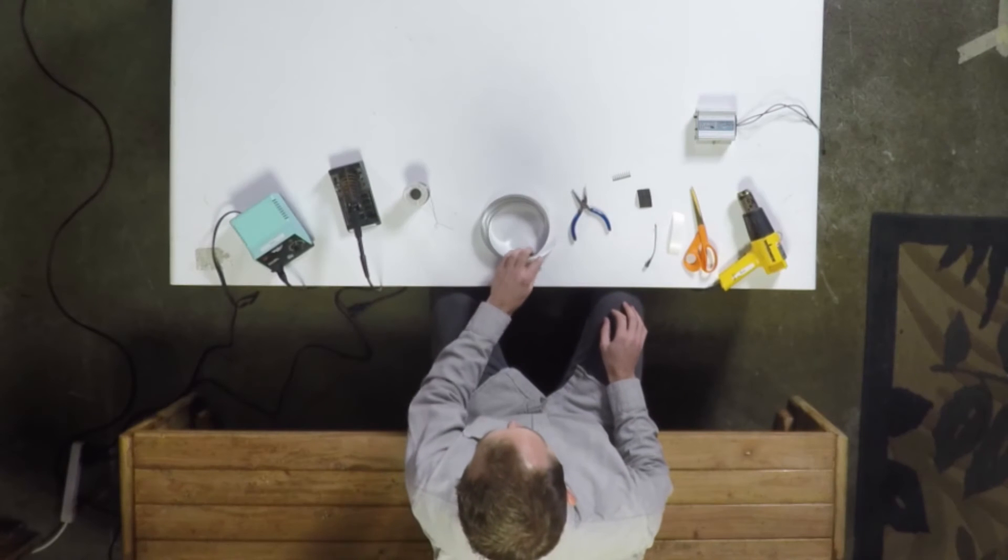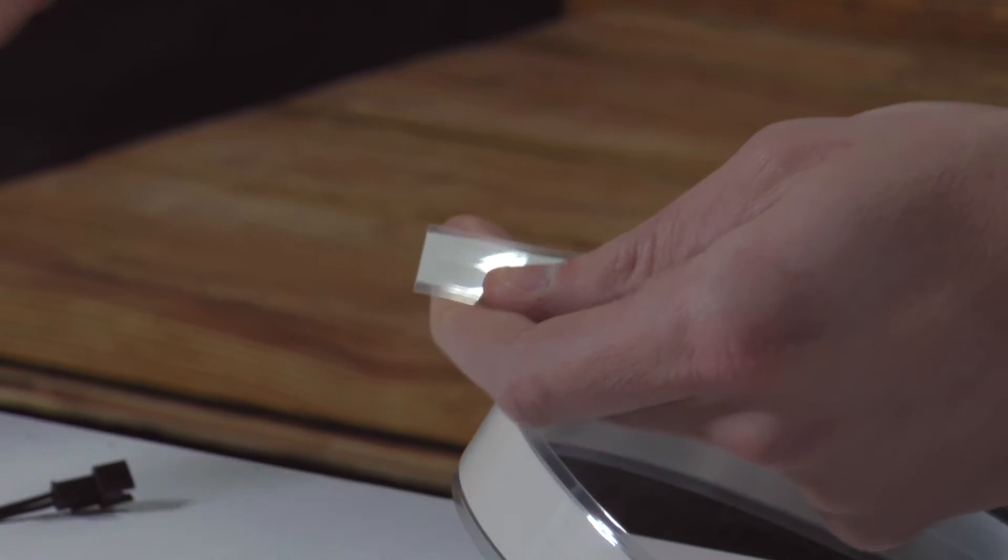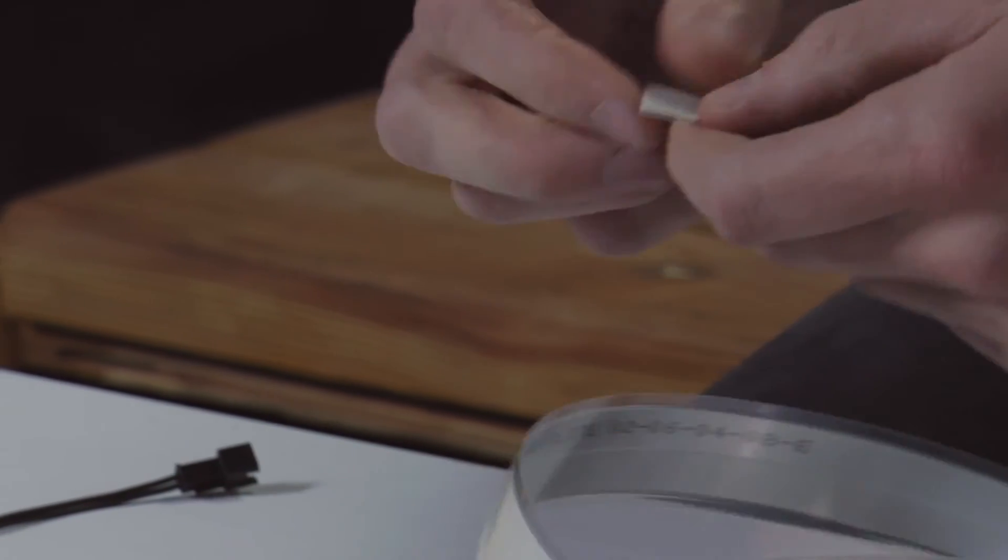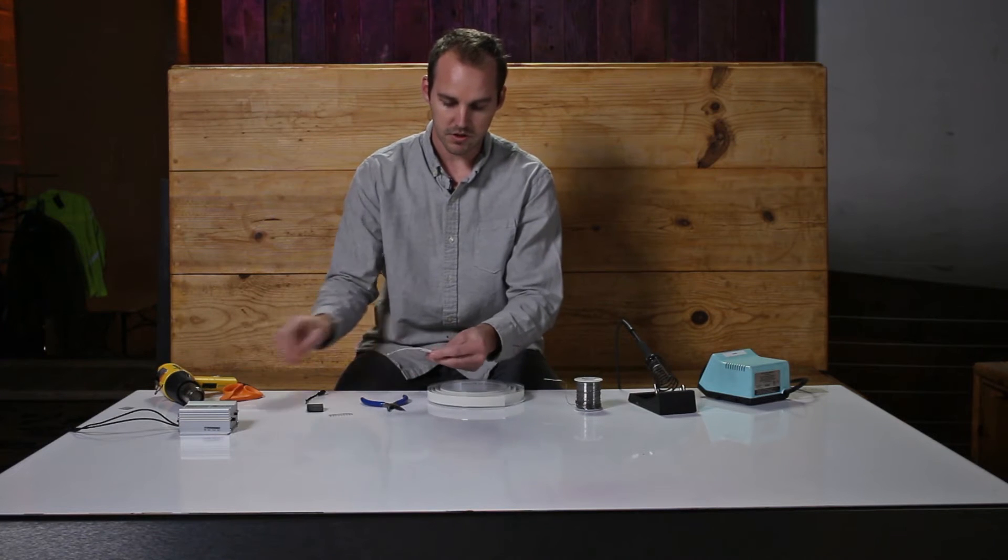So first things first, what we're going to do is cut about an inch off of our split tape. This allows us to have no moisture or debris inside the connection area. Immediately following cutting it, we're going to put some edge guard on it.